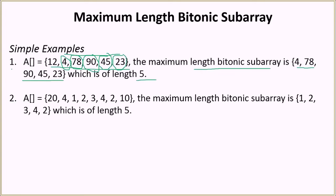In the second example the maximum length is again 5. The subarray starts at 1, then 2, then 3, then 4 — the elements are increasing up to this point. Then it decreases to 2. The next element 10 is greater than 2, so we do not include it, and 4 was also greater than 1, so we don't include that either. This is the bitonic subarray and the maximum length is again 5.